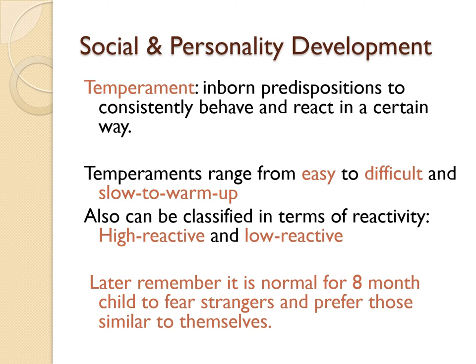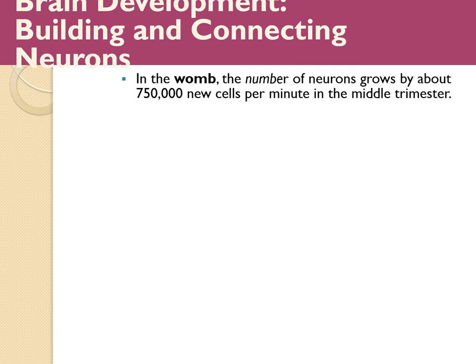Important test note: it is normal for an eight-month-old child to fear strangers and prefer people similar or familiar to themselves. This is a genetically driven preference. However, by three to four years old, stranger anxiety is no longer normal.